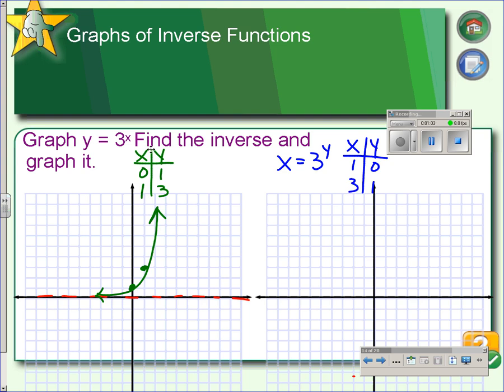So the graph would go here instead, and the asymptote, instead of being on the x-axis, would be on the y-axis, because we're switching x and y. So then the curve would look like this.